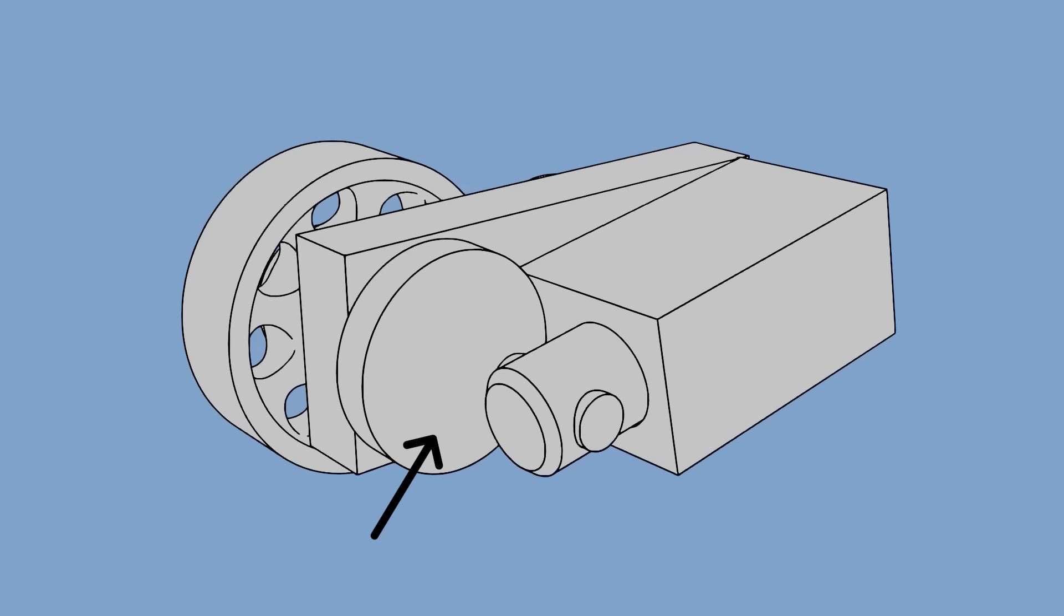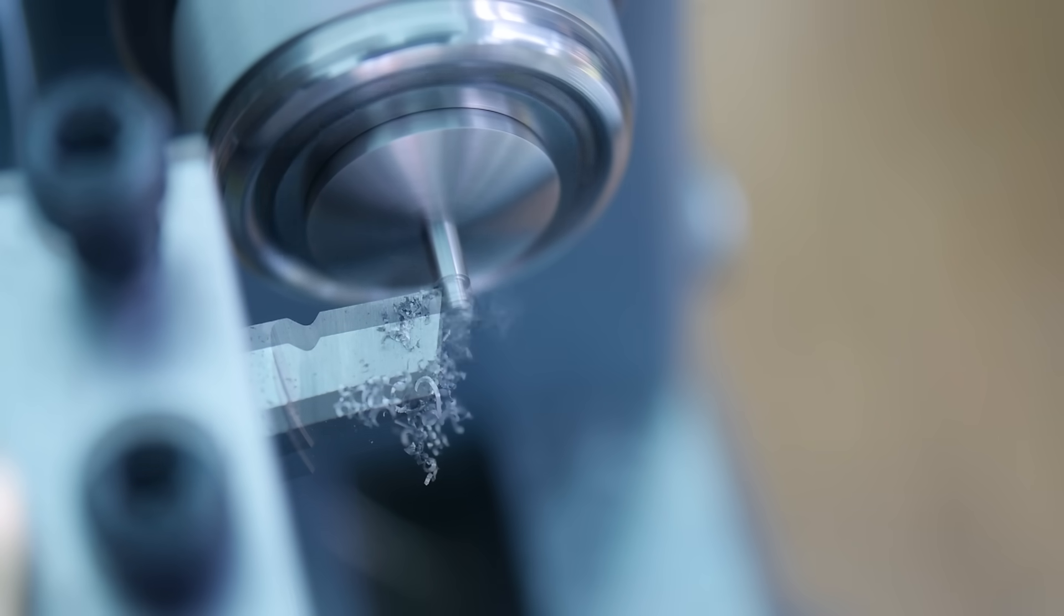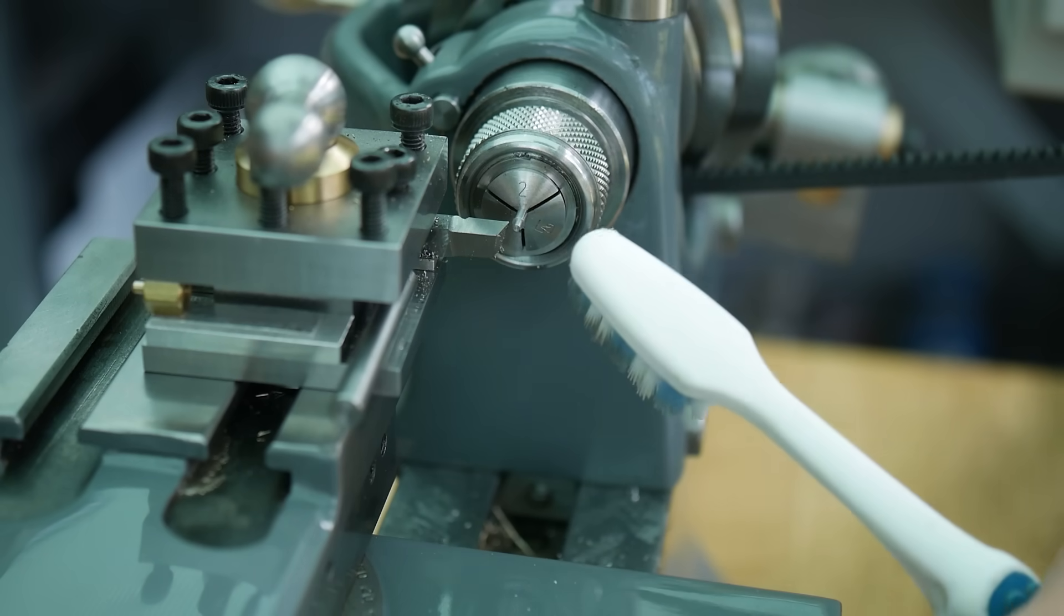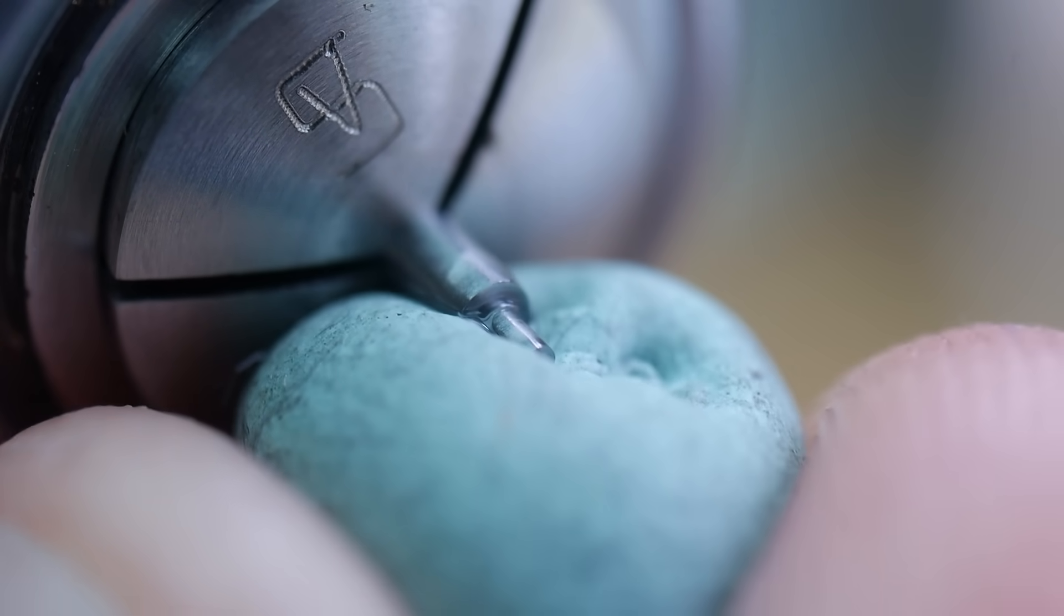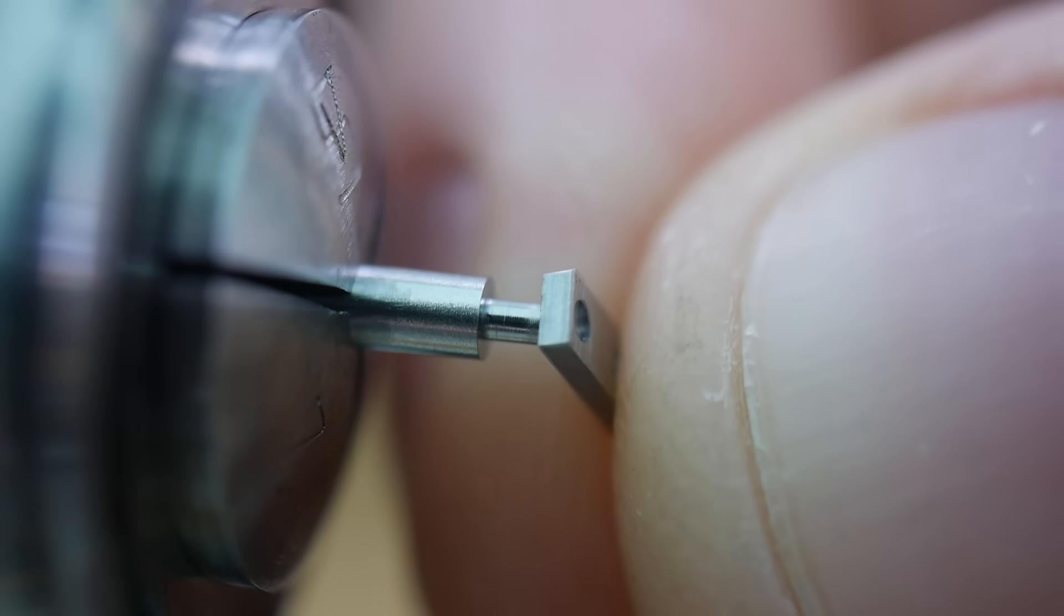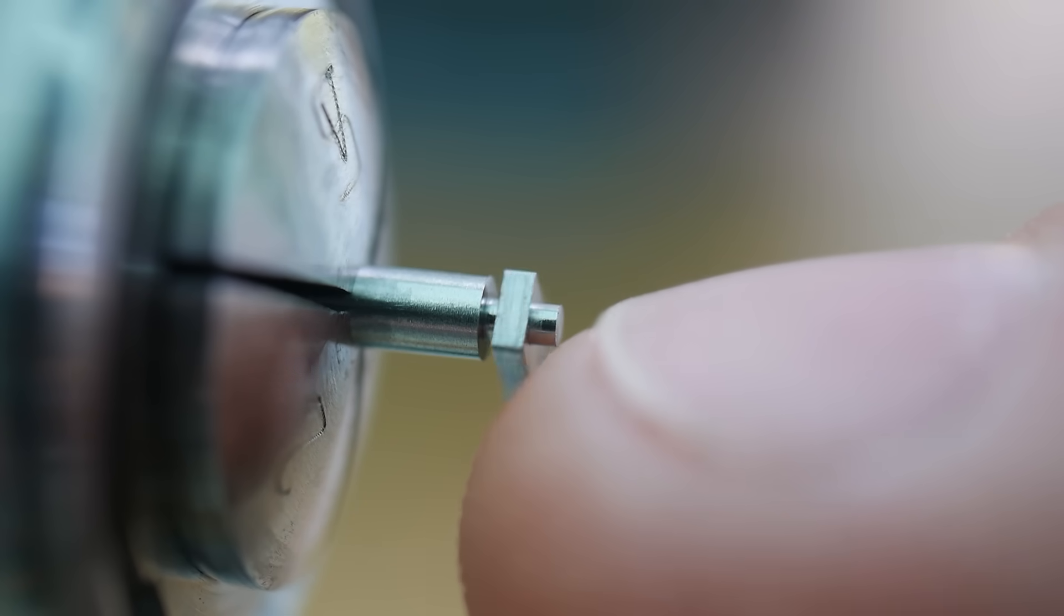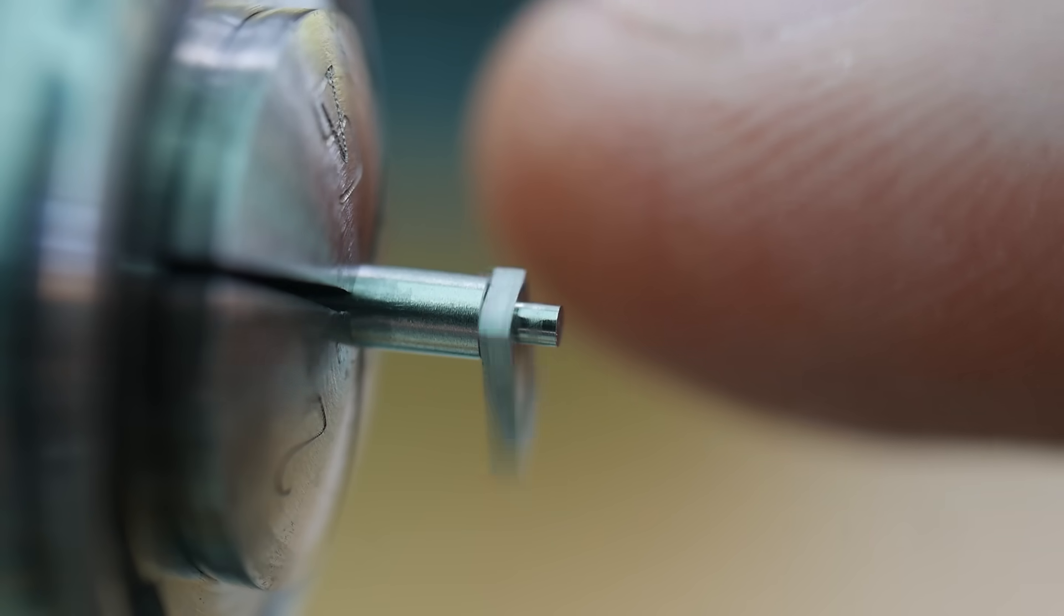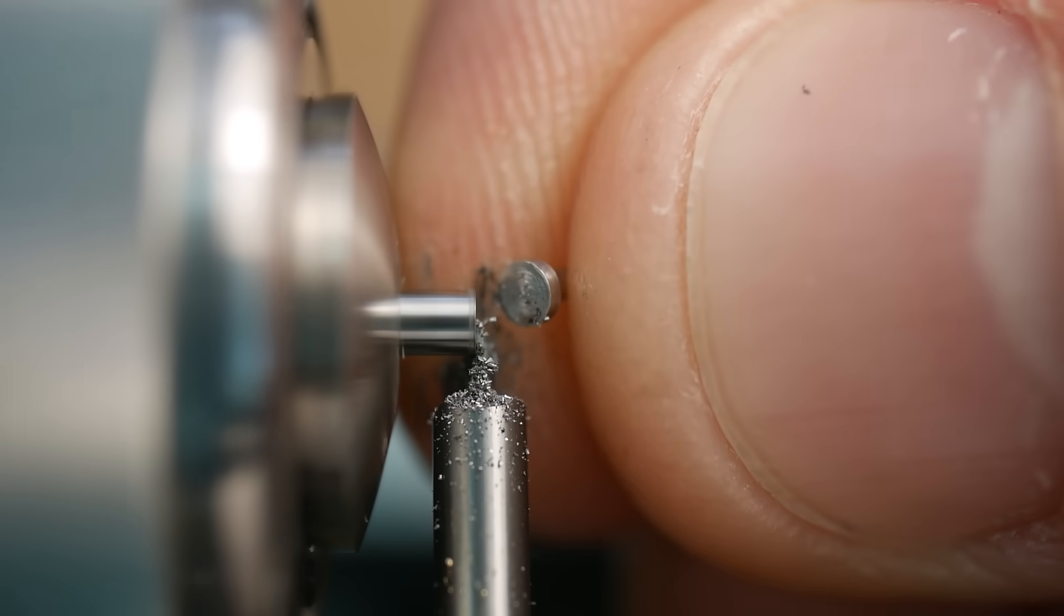The crankshaft converts the reciprocating motion of the piston into rotation of the flywheel. I begin by machining and burnishing the axle. This burnisher is made from sapphire, which is much harder than steel. The burnisher work hardens the surface, which is useful for pivots or bearing surfaces like this axle. I part off the component and reverse it in the collet to face it to size.